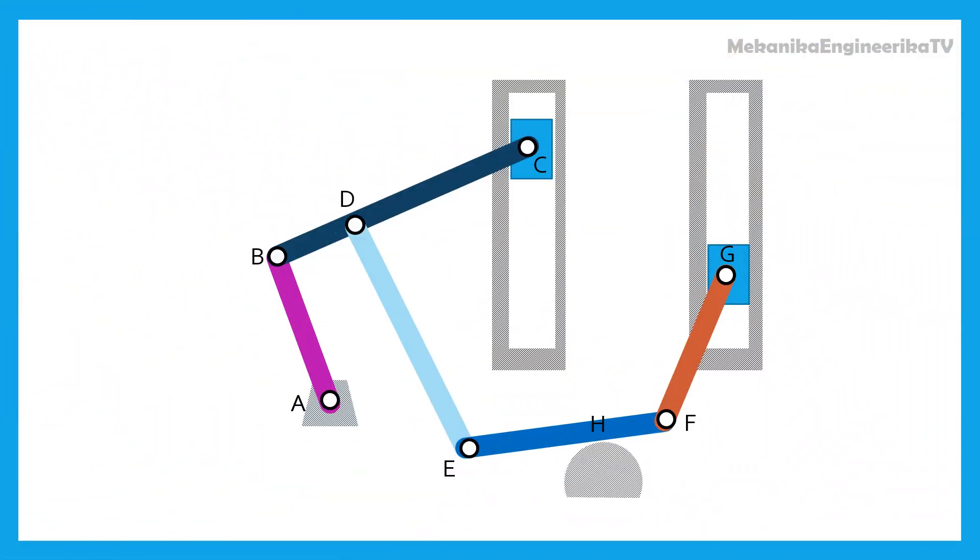In this problem, we are asked to determine the mobility of the mechanism shown here. The mechanism is built up from 8 links: the ground, 2 sliders, and 5 bars.